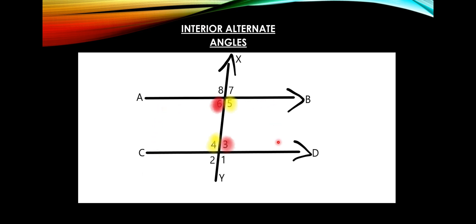The first type is interior alternate angles. In this figure there are two straight lines AB and CD and one transversal XY. In the interior part of the two straight lines, if angles are formed on alternate sides of the transversal, they are known as interior alternate angles. Angle 6 and angle 3 are one pair, and angle 5 and angle 4 are another pair of interior alternate angles.